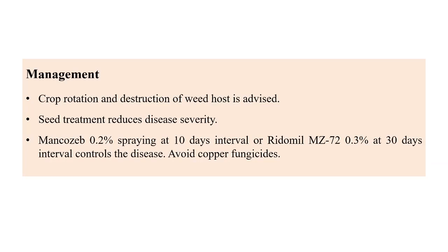For management of downy mildew, crop rotation and destruction of weed hosts is advised. Seed treatment with fungicides is also recommended. Spraying mancozeb at 0.2 percent at 10-day intervals, or Ridomil MZ 72 at 0.3 percent concentration at 30-day intervals can control the disease. Copper-related fungicides can also be used.